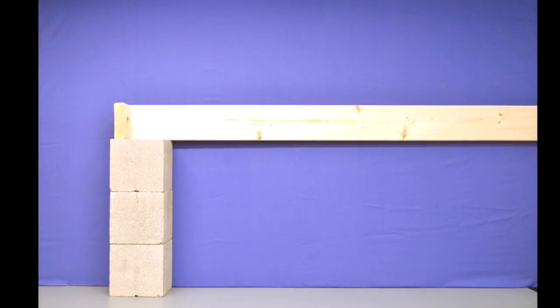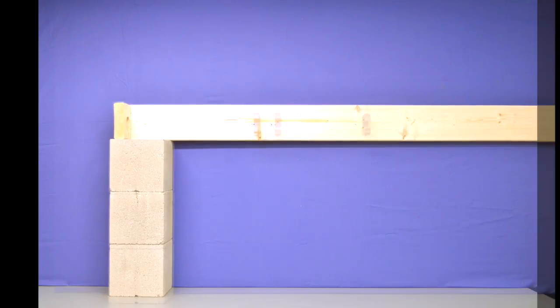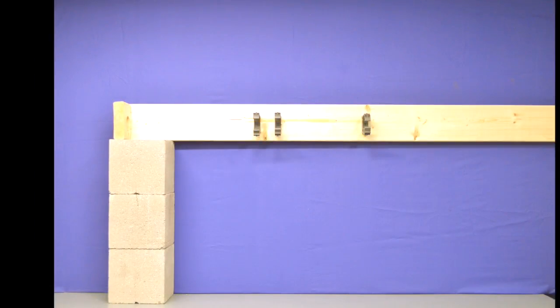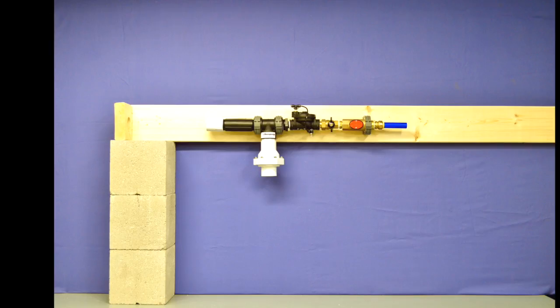Locate a ceiling joist approximately above the sump pit for mounting the base pump. Locate and attach the clamps onto the ceiling joist using the hardware included. Attach the base pump onto the clamps and secure tightly.